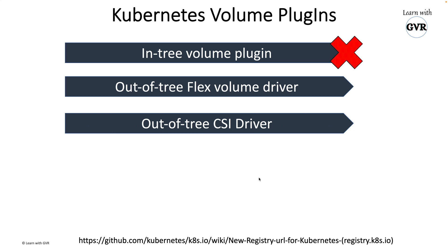From a Kubernetes volume plugin perspective, there are three total types: first, the intree volume plugin; second, the out-of-tree flex volume driver; and third, the out-of-tree CSI driver. The intree and out-of-tree flex volume plugins are now deprecated. Only the CSI driver remains in the picture.